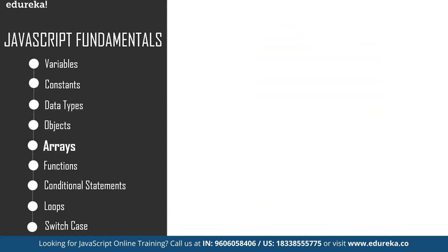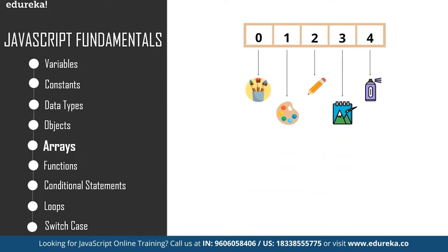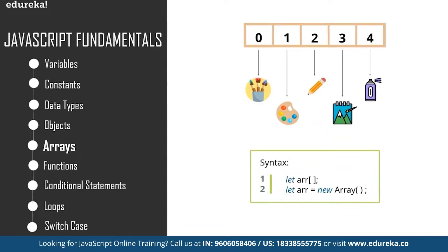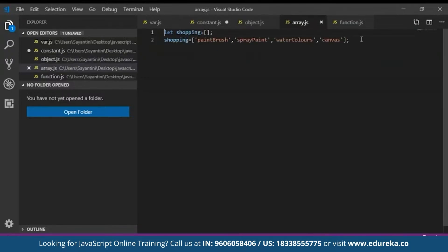An array is a data structure that contains a list of elements which store multiple values in a single variable. For example, if you went shopping to buy art supplies, the list of items you bought can be put into an array. To declare an array in JavaScript, we use the 'let' keyword with square brackets, and all array elements must be enclosed within them. When you don't insert any value, it is an undefined array, and you can put any number of values inside.